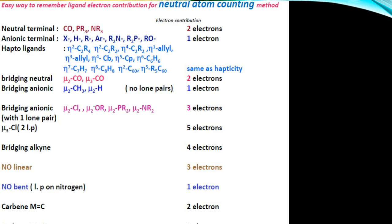Bridging anionic with 1 lone pair has 3 electrons, and with 2 lone pairs it has 5 electrons. For bridging alkyne, it's 4 electrons. For NO linear it's 3 electrons, NO bent is 1 electron. For carbene it's 2 electrons, and for carbyne it's 3 electrons.